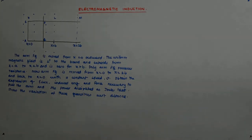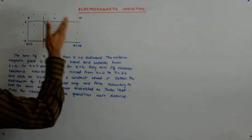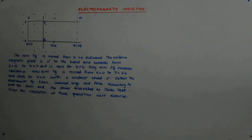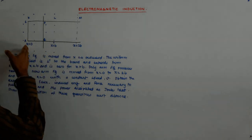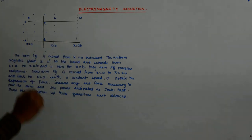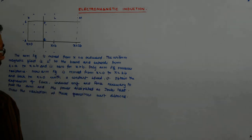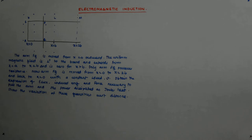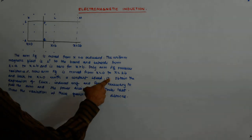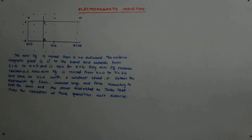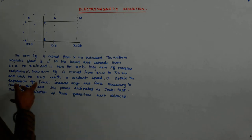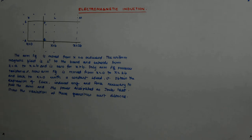Let us try to solve this problem. We are given a U-type fixed rail and a movable rail PQ that moves from x=0 to x=b, then to x=2b, and then comes back to x=0 with uniform velocity. Arm PQ possesses some resistance R. We need to obtain the expression of induced flux, induced EMF, force necessary to pull the arm, and power dissipated as Joule heat, and show the variation of these quantities with respect to distance.